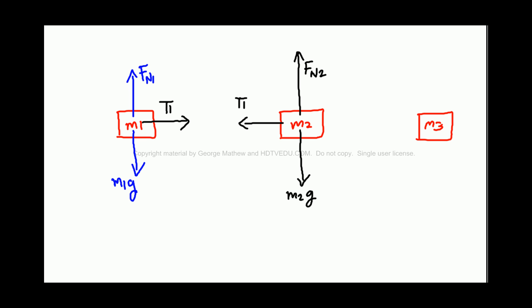So we covered the normal force, we covered the gravitational force, we covered the tension on the left. We also have tension on the right. So that is T2. There is no friction.